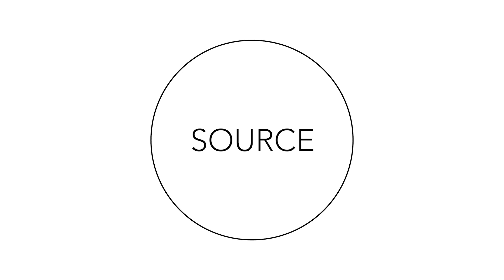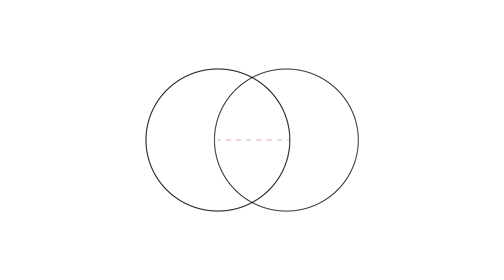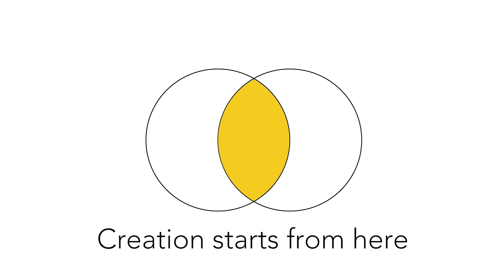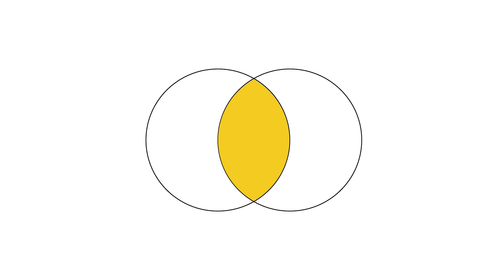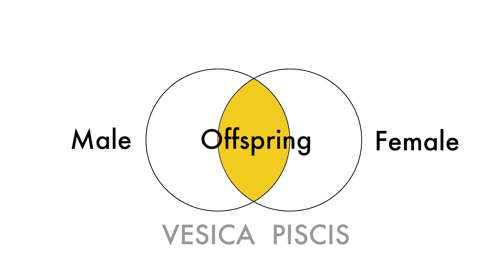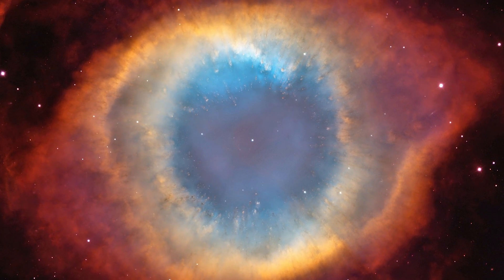Now, this circle — Source — let's imagine it's by itself. It gets bored and decides to create something to interact with. It decides to move to the boundary of itself and duplicates itself. Boom. Let there be light. The Big Bang starts. Now we start to dive into the world of polarity, because we have two circles and not one anymore. One being male and the other female create an offspring in the middle, which we call the Vesica Pisces. So yes, the Vesica Pisces is the womb of the universe. That's where all creation happens.